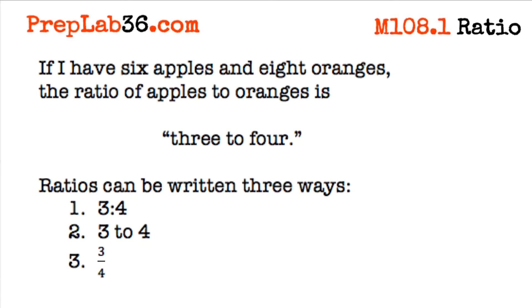Ratios can be written three ways. The first is with a colon: 3:4. The second is with the word 'to': we can say 3 to 4, T-O-4. And lastly, ratios can also be written as a fraction — so 3 over 4 can be read as 3 to 4.